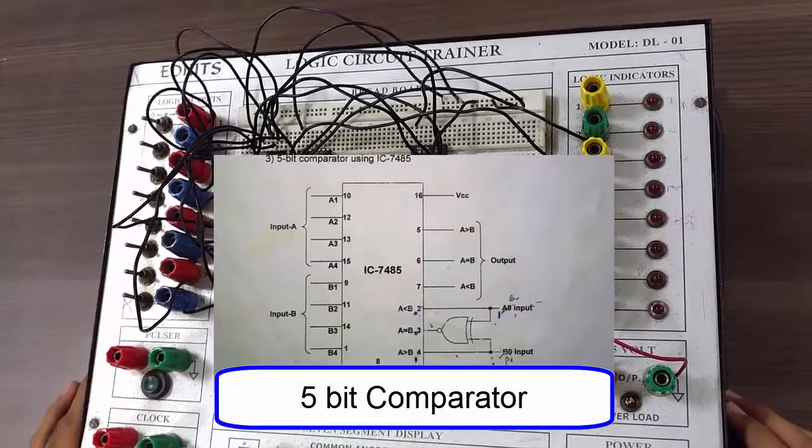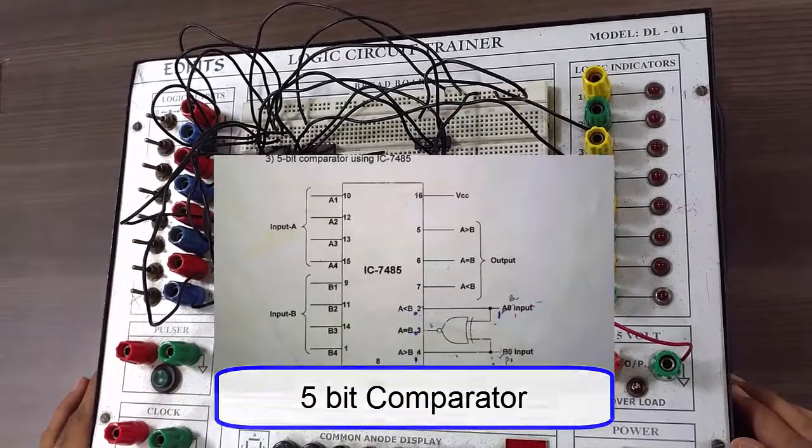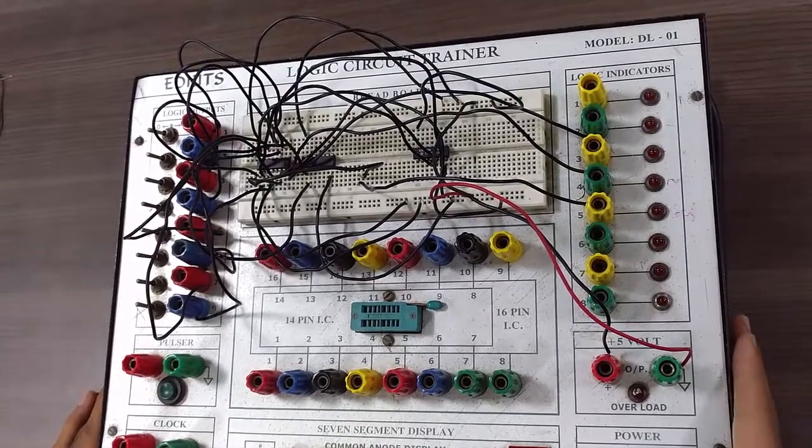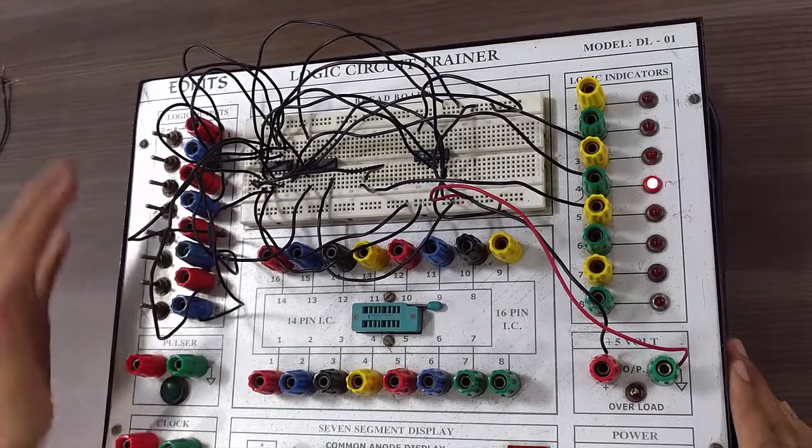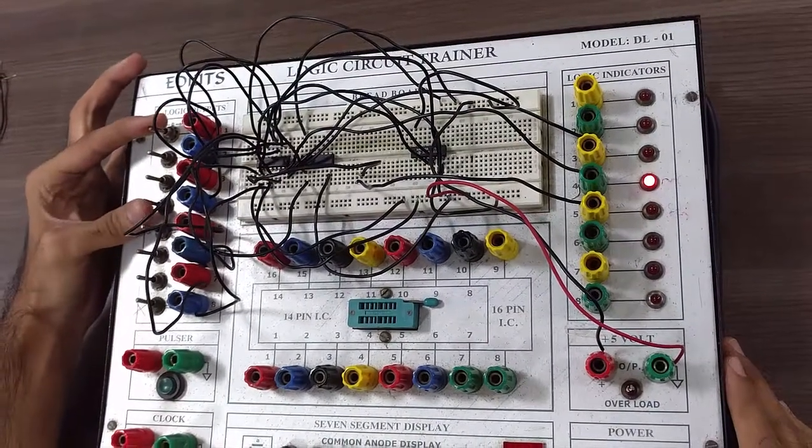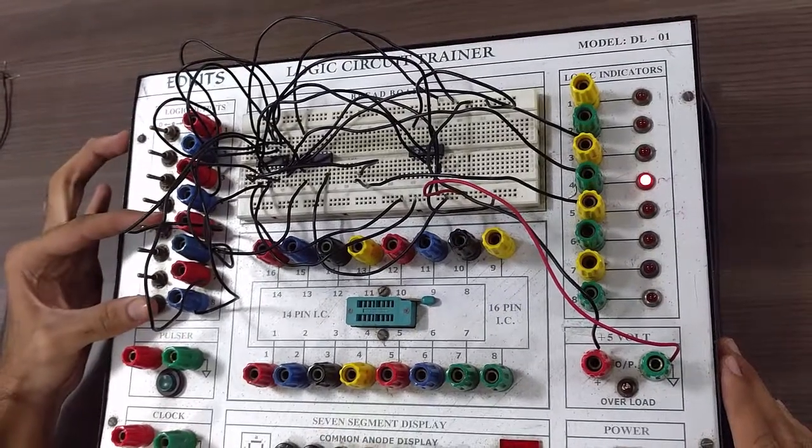Okay, so now we have made the connections for 5-bit comparator as we have discussed earlier. So now let's check the output. Let's just power it on. As you can see, all these 4 bits are for A input and these are for B input.